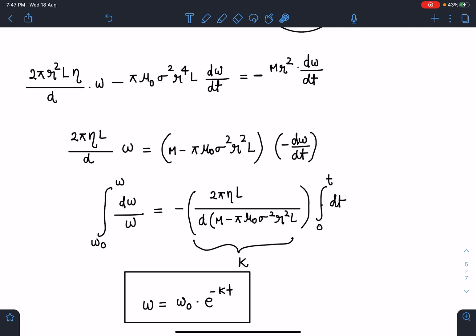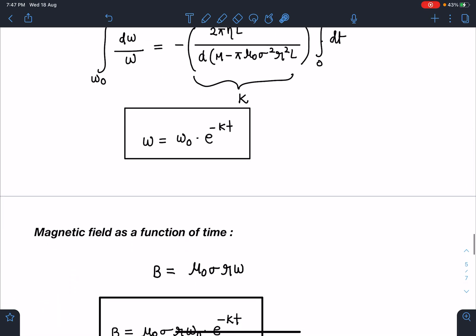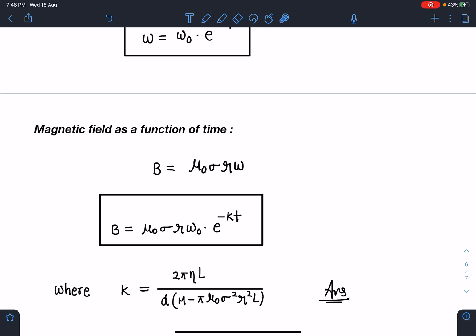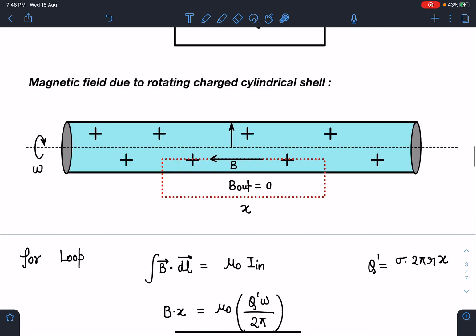After this, magnetic field as a function of time which I have derived earlier - I can just substitute this value of omega. So B is going to be μ₀·σ·r·ω₀·e^(-kt), where k is given by this number which depends on the other data given in the problem like viscosity, length, mass, radius, charge density, and the gap of the channel. This is going to be the final answer. If you have enjoyed, don't forget to leave a like in this problem to encourage this kid.